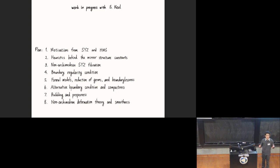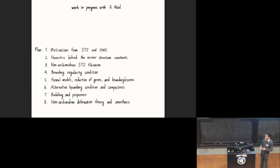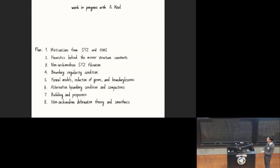When we want to count something, we look at the moduli space of all such objects, and we need to establish enough properties so that eventually the count can make sense. Starting from now, I will explain all the crucial properties of this moduli space of non-Archimedean analytic curves that we managed to prove, so that eventually it makes sense to count, and also the count gives all the expected properties that we want.